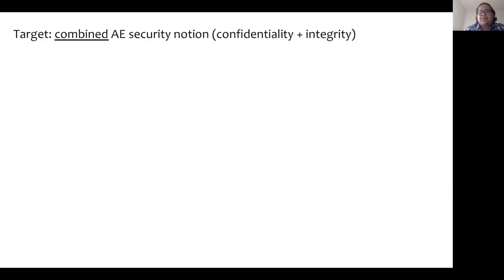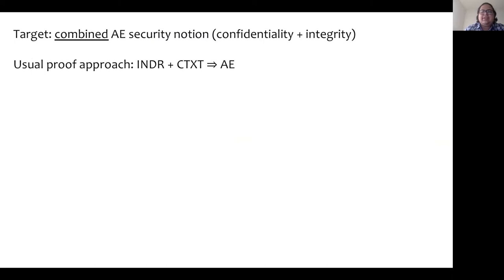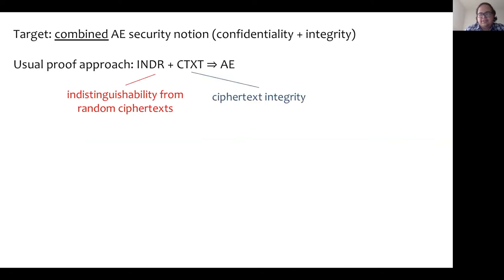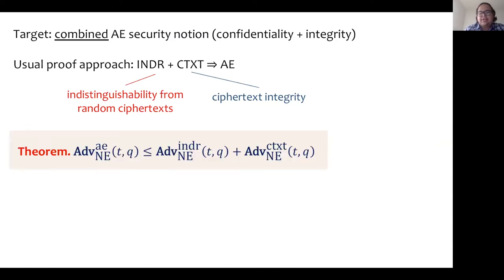We target the notion of AE that combines confidentiality and integrity. The usual approach is to prove separately a bound on INDAR security — that is, indistinguishability from random ciphertext — and a bound on CTEX security — that is, ciphertext integrity — and then combine them to show AE security. This can be cast as a concrete security theorem that upper bounds the advantage against AE security in terms of the advantages against INDAR and CTEX securities.